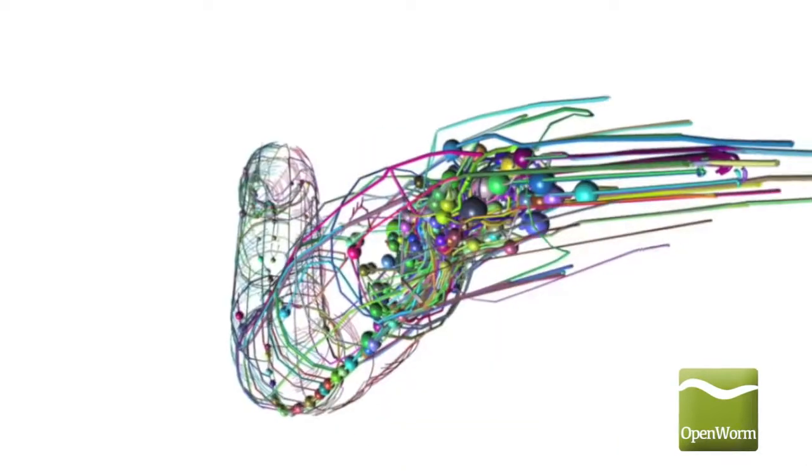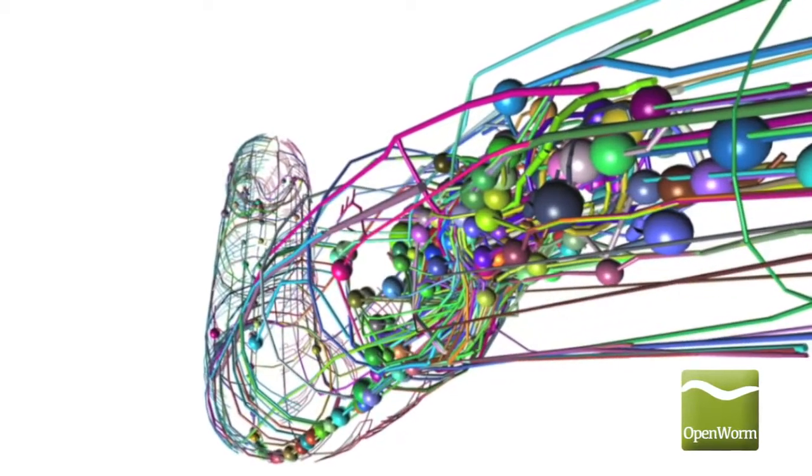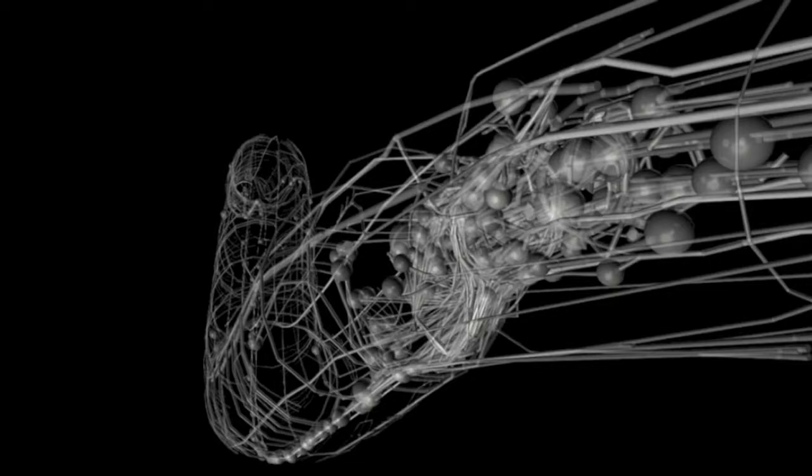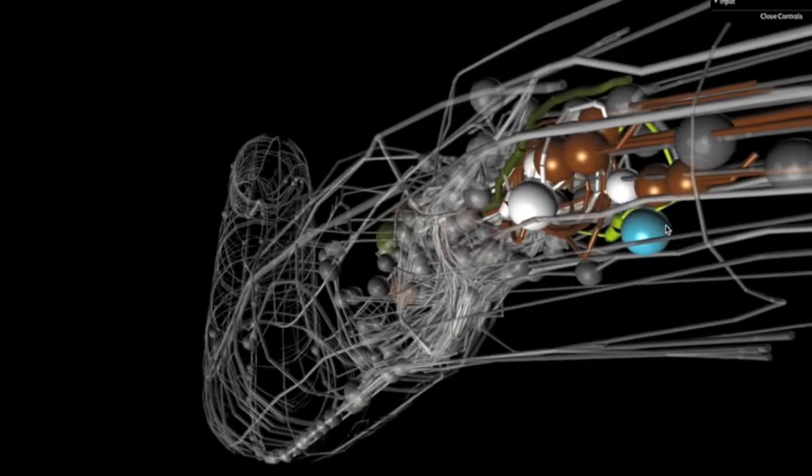However, as a result of its simplicity, transparent nature, and the well-characterized cell lineages, the entire pattern of neuron connections, or connectome, of the C. elegans has been mapped.